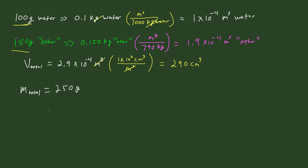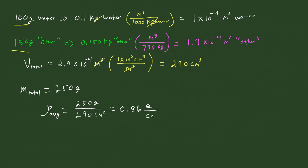The average density is going to be equal to the mass divided by the volume. The mass is 250 grams divided by 290 cubic centimeters, and that is going to be less than 1 — I get 0.86 grams per cubic centimeter.